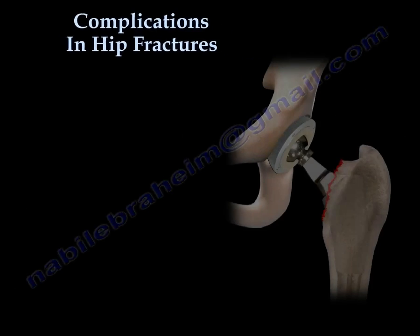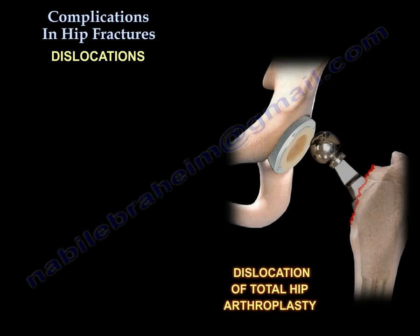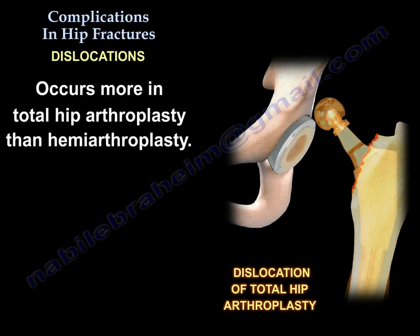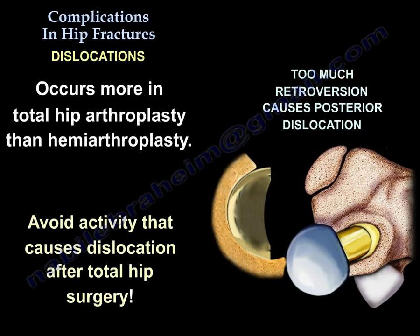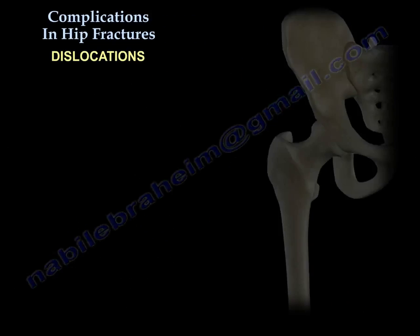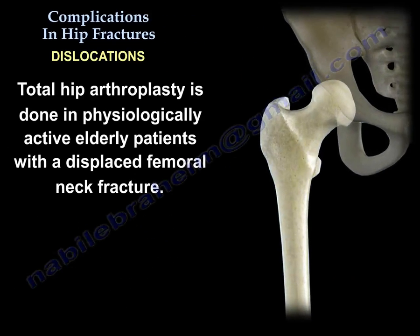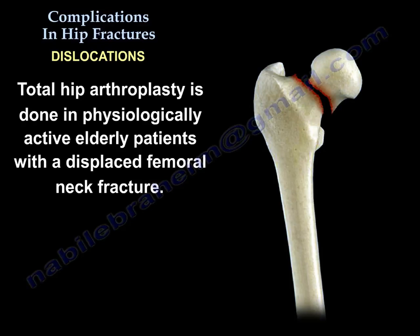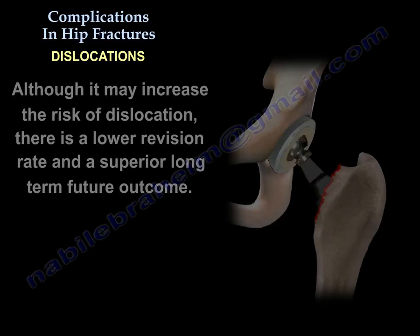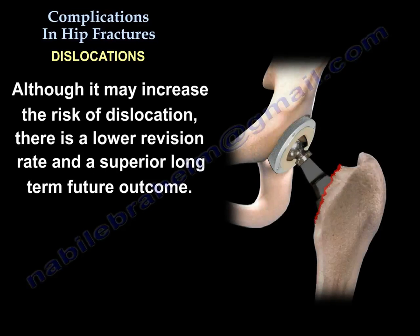Complications in hip fractures: dislocations occur more in total hip arthroplasty than hemiarthroplasty. Total hip arthroplasty is done in physiologically active elderly patients with a displaced femoral neck fracture. Although it may increase the risk of dislocation, there is a lower revision rate and a superior long-term functional outcome.